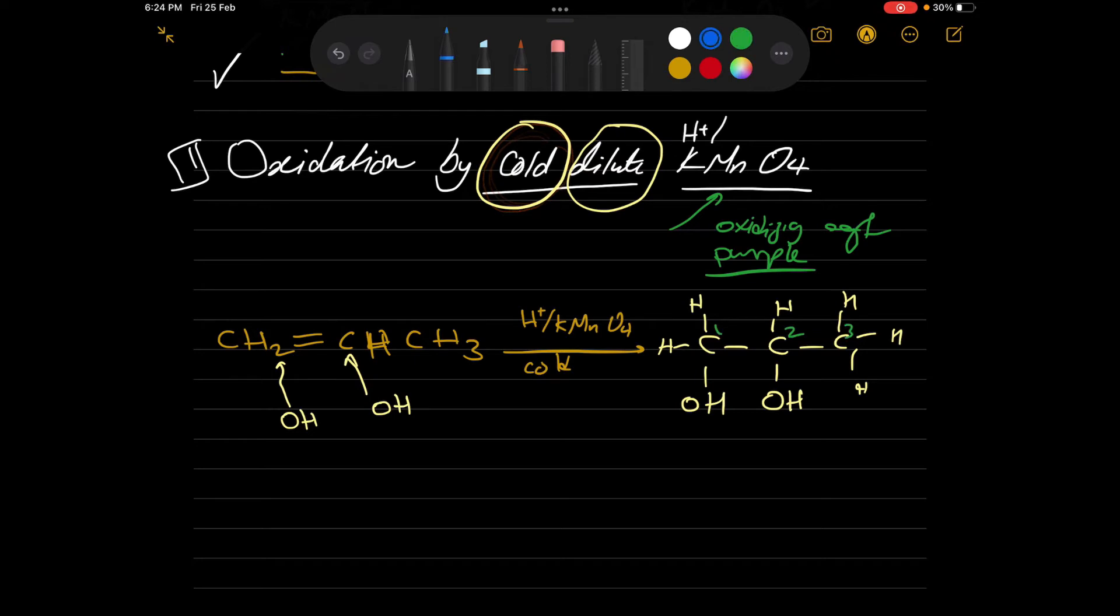Then this is propane. So we can write propane as it is, and we put the position of the OH groups. The OH groups are in carbon one and carbon two. We can say one, two, and then we write diol. Then the compound is propane-1,2-diol, which means the presence of the two OH groups. So what we conclude from this lesson, the oxidation by cold, dilute KMnO4 leads to produce diol, which is a compound that contains two OH groups in this case.